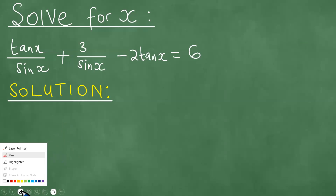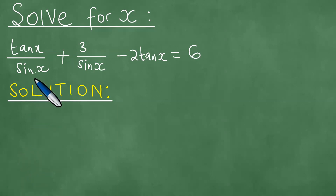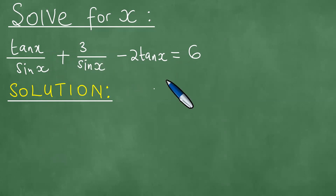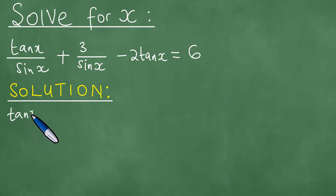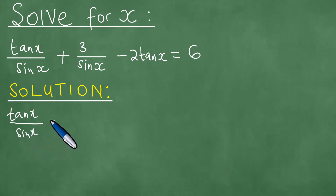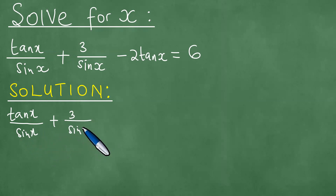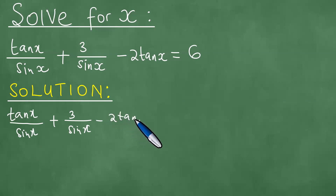We need to solve for x given the equation: the tangent of x over sine x plus 3 over sine x minus 2 tangent x equals 6. We write down the solution to the problem, starting with tan(x)/sin(x) + 3/sin(x) - 2tan(x) = 6.